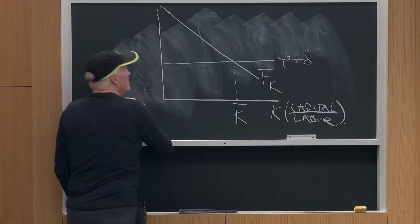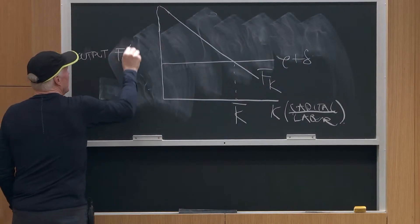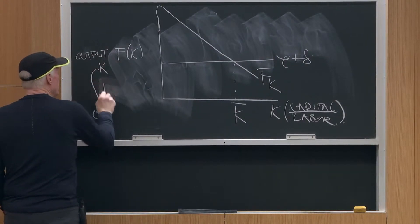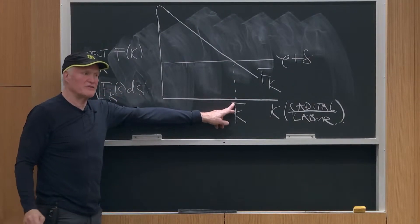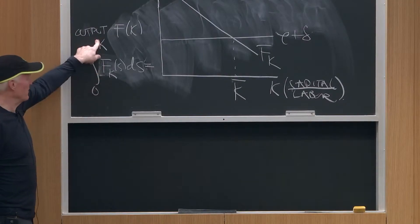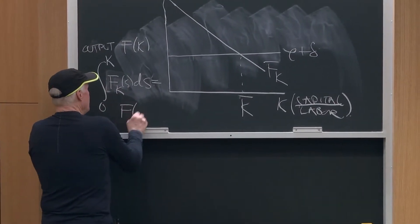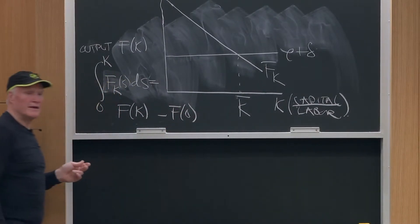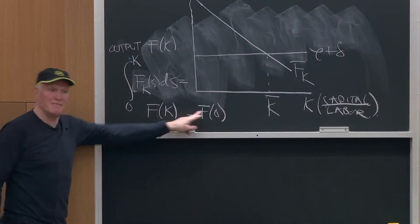Now remember, output is just F of K. But the integral from 0 to K of FK of s ds — that is, the integral under this marginal product schedule — is equal to what? How many people remember math? What's the integral from 0 to K of the derivative of a function? That's F of K minus F of 0. The integral from 0 to K of the derivative of the function is the function itself at K minus the function at 0.